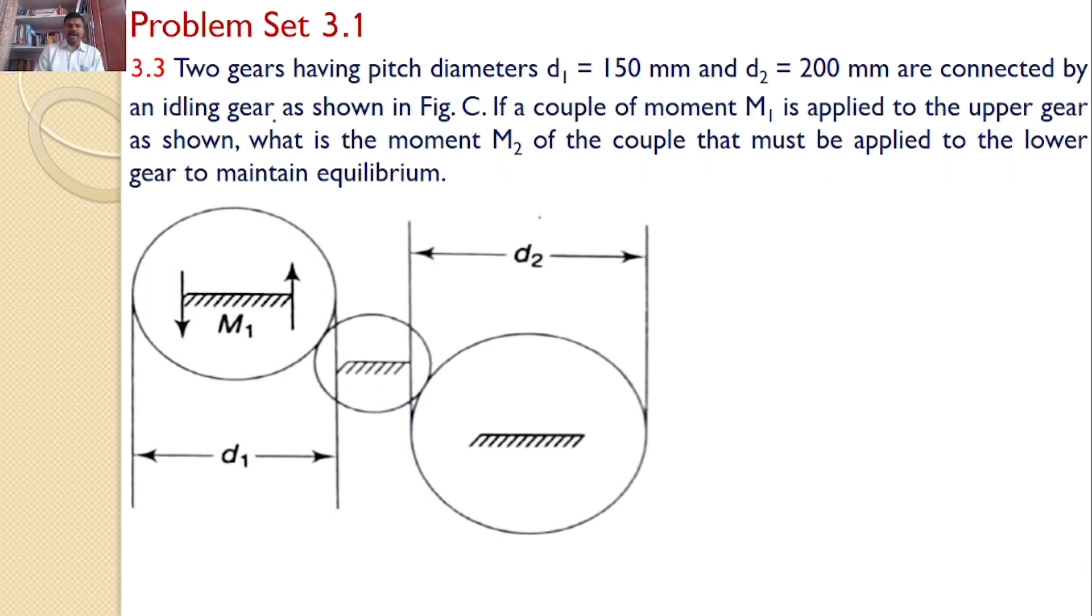are connected by an idling gear as shown in the figure. If a couple of moment M₁ is applied to the upper gear, what is the moment M₂ of the couple that must be applied to the lower gear to maintain equilibrium?